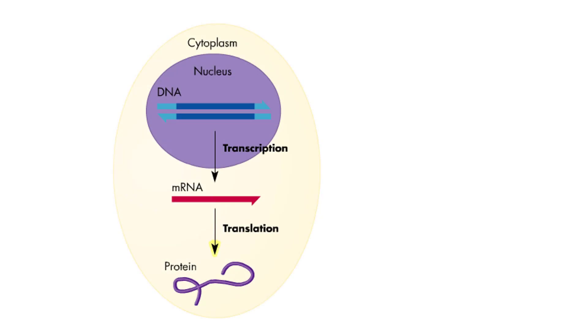Translation converts the four-letter nucleotide language of RNA into the 20-letter amino acid language of proteins. The genetic code relates the sequence of nucleotides to the sequence of amino acids. The genetic code is practically universal.